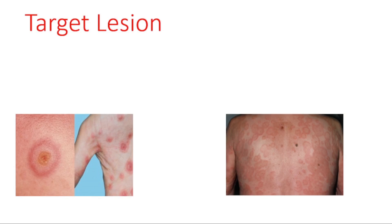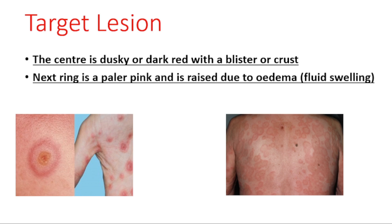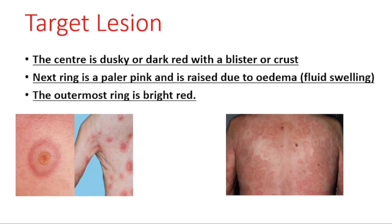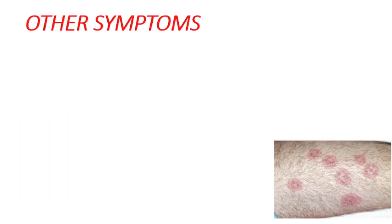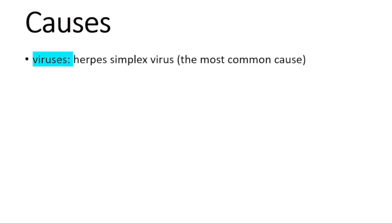The target lesion has three rings: the center is dusky or dark red with a blister or crust; the next ring is a paler pink and is raised due to edema; and the outermost ring is bright red. Systemic symptoms can include high temperature, headache, feeling unwell, raw sores inside the mouth, and swollen lips covered in crust.